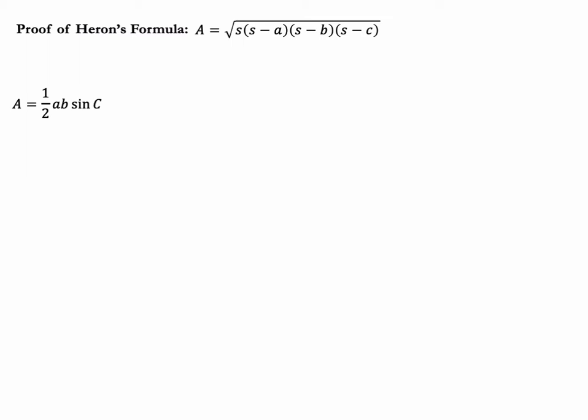If we start with this formula — the area of a triangle — we can do one-half base times height, or one-half times a times b times sine of c. Now, thinking about the goal here, notice that our formula has a square root in it. So in order to get a square root, what might you do to both sides of this equation so that you can start to incorporate a square root? You might try squaring both sides. Pause the video, try this out, square the right side, and then press play when you're ready.